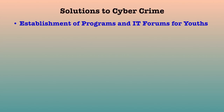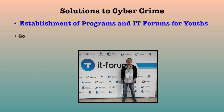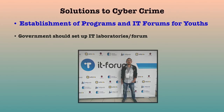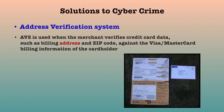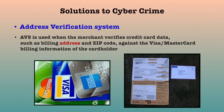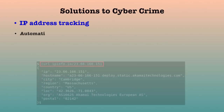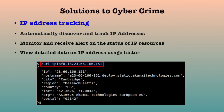Another solution is the establishment of programs and IT forums for youths. Since unemployment has contributed significantly to the spate of e-crime, the government should create employment for youths and set up IT laboratories or forums where they can display their skills meaningfully towards developing IT. They could be rewarded handsomely for such novelty. Address Verification System checks could also be used to ensure that the address on order forms matches the cardholder's billing address, and software could track the IP address of orders to confirm it matches the billing and shipping address country.